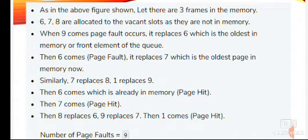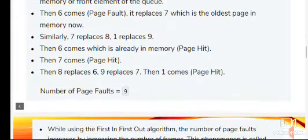Then 6 comes and replaces 7, which is the oldest page in memory. Similarly, 7 replaces 8, and 1 replaces 9. Then 6 comes — it is already in memory, so this is a page hit. Then 7 comes — it is also a page hit. Then 8 and 6 are replaced, and 9 is also replaced by 7. Then 1 comes — it is a page hit. The total number of page faults is equal to 9.